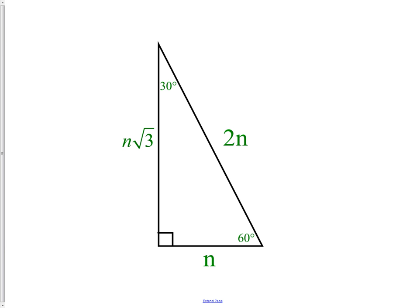One side is going to be n, that's going to be the shortest side. So the side opposite the 30 degree angle will be your n.